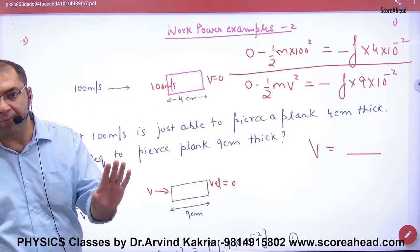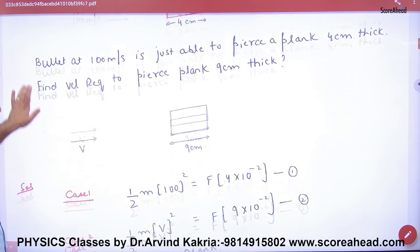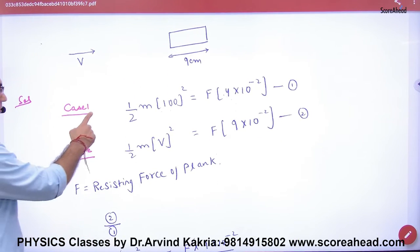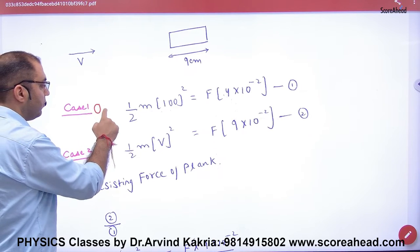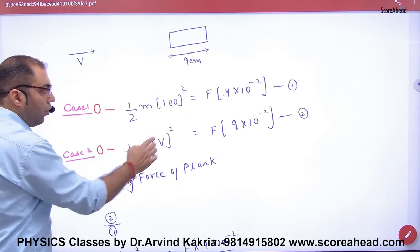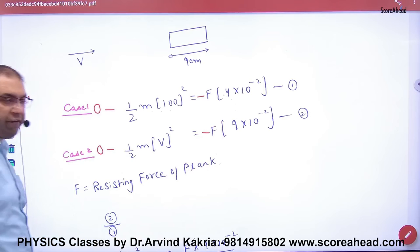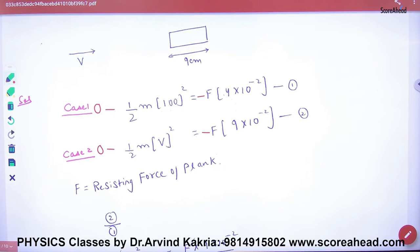No doubt, so what have you done? In this solution you have not put negative signs, so let's do it properly. Write this: 0 minus half mV squared, and here minus sign, where f is force of friction. This point clear here? No doubt?